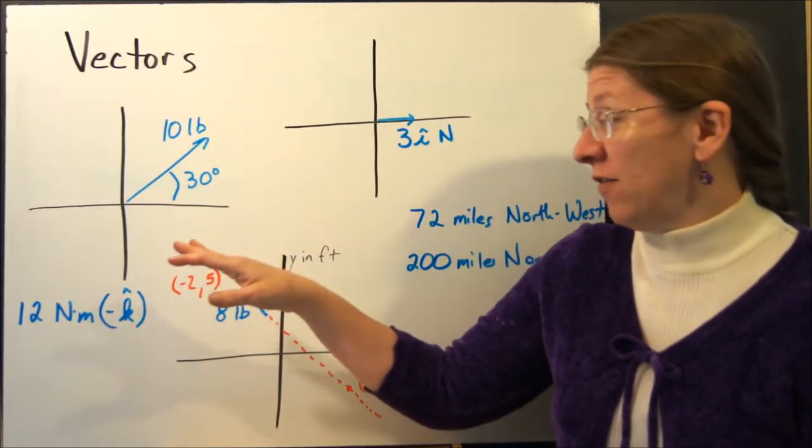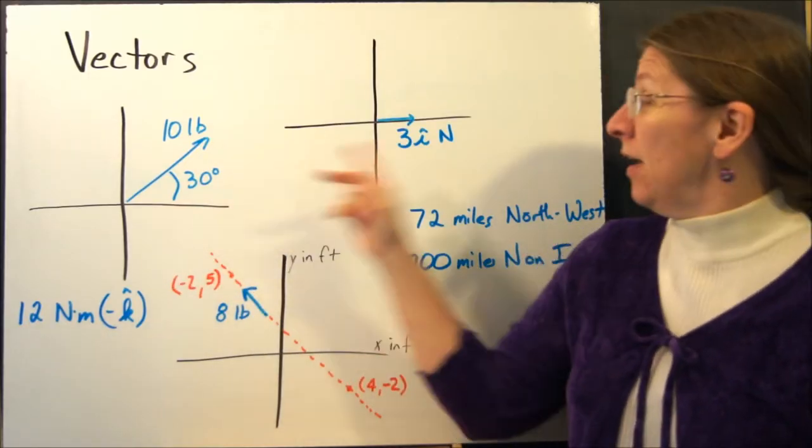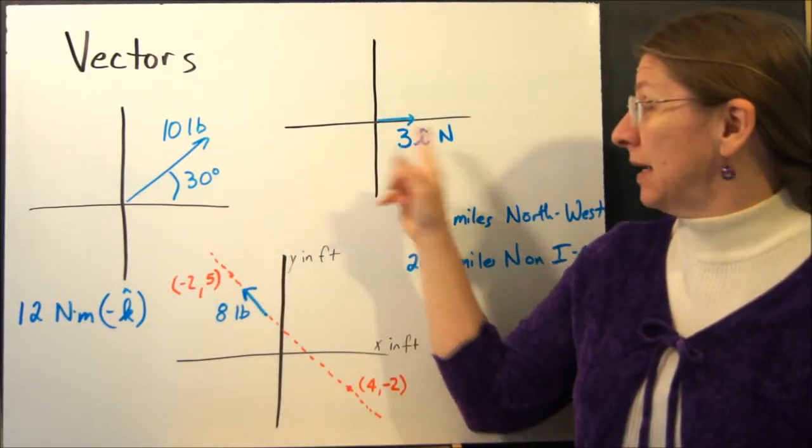In general, if I asked you to draw a vector, you'd probably give me something like this - a magnitude and a direction. This is a vector. It has a magnitude and a direction.